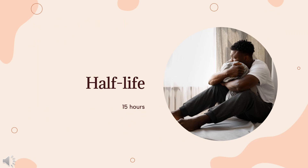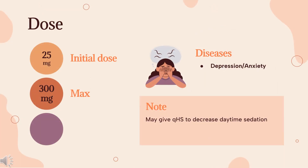Half-life: The mean elimination half-life is reported to be 15 hours. Dosing — Depression/Anxiety: Initiate at a low dose of 25 mg per day, gradually titrating upward every 5 to 7 days. Dosage range: 25 to 300 mg/day orally; up to 150 mg may be given as a single dose. If the dose exceeds 150 mg per day, divide into Q12HR dosing. May give QHS to decrease daytime sedation. Insomnia: 3 to 6 mg orally within 30 minutes before bedtime, not to exceed 6 mg per day. For hepatic impairment or debilitated patients: 3 mg orally within 30 minutes before bedtime.